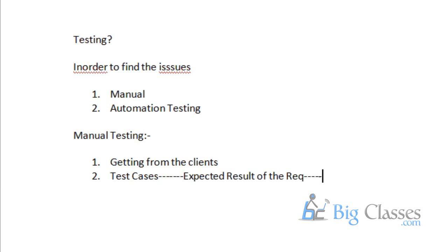First we get the requirement from the client, then understand the requirements. If we find any gaps, we involve stakeholders and discuss. Once requirements are clear, we prepare the test case. Meanwhile, the development team is developing the code for the requirements in parallel.